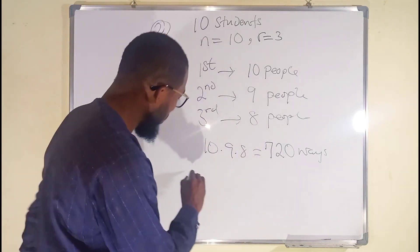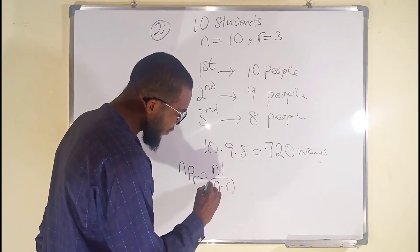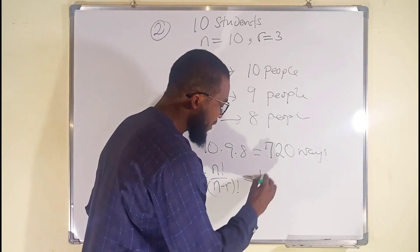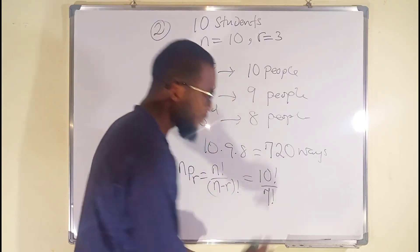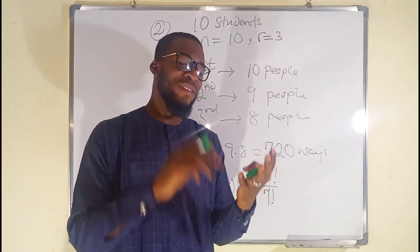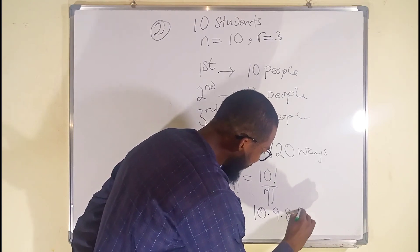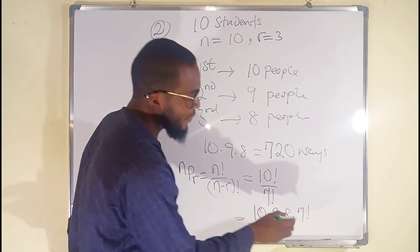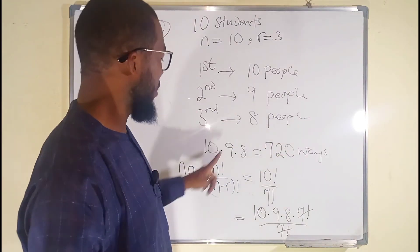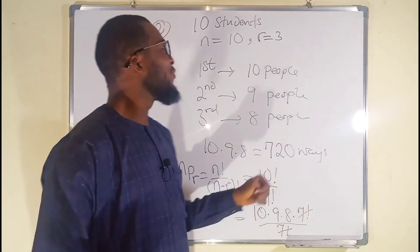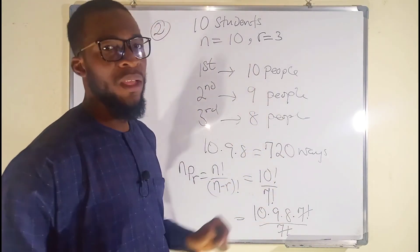We can also apply our formula: N permutation R equals N factorial divided by (N minus R) factorial. N is 10, so this is equal to 10 factorial divided by (10 minus 3), which is 7 factorial. Remember that 10 factorial is the same as 10 times 9 times 8 times 7 factorial. So we can write it as 10 multiplied by 9 multiplied by 8 multiplied by 7 factorial, and dividing by 7 factorial cancels it out. What we have is 10 times 9 times 8, which is 720 different ways. So there are 720 different ways in which 1st, 2nd and 3rd positions can be taken among 10 students in a class.